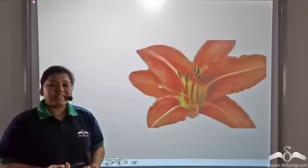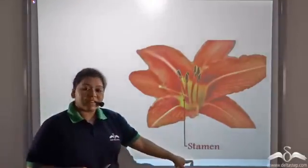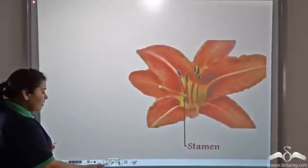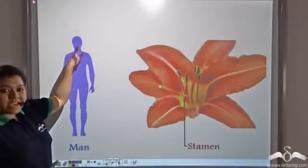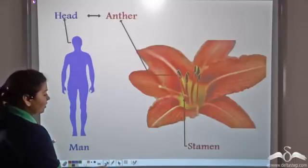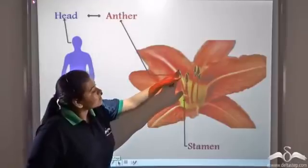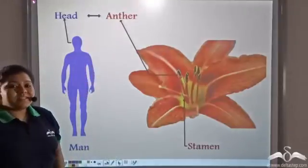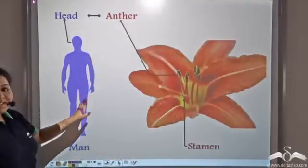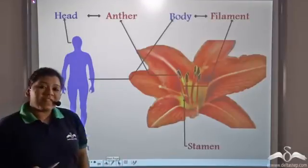The androecium consists of male parts, and one male part is known as a stamen, which can be compared to a man. Just like a man has a head, a stamen has a head which is known as the anther. This dark part of the stamen is known as the anther. And just like a man has a body, similarly a stamen has a body which is known as the filament.